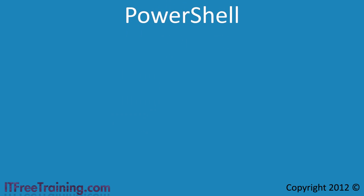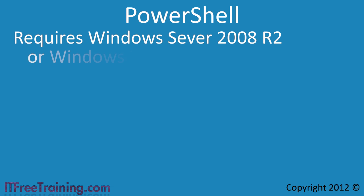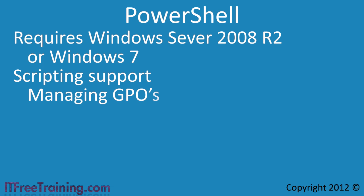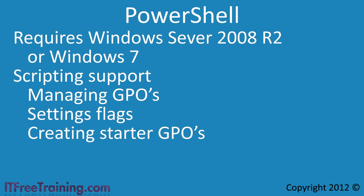The next feature is PowerShell support for group policy. In order to run PowerShell scripts that can administer group policy, the scripts need to be run on a computer running Windows Server 2008 R2 or Windows 7. PowerShell support includes the ability to manage group policy objects in Active Directory, configure flags in group policy such as block inheritance and enforce, and create and modify starter group policy objects using a PowerShell script. Having PowerShell support means another dimension of group policy administration.